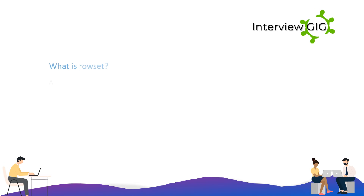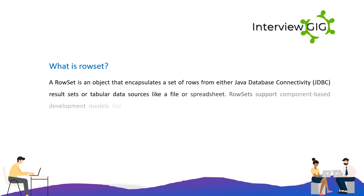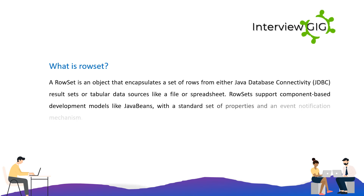What is RowSet? A RowSet is an object that encapsulates a set of rows from either a JDBC ResultSet or tabular data sources like a file or spreadsheet. RowSets support component-based development models like JavaBeans, with a standard set of properties and an event notification mechanism.